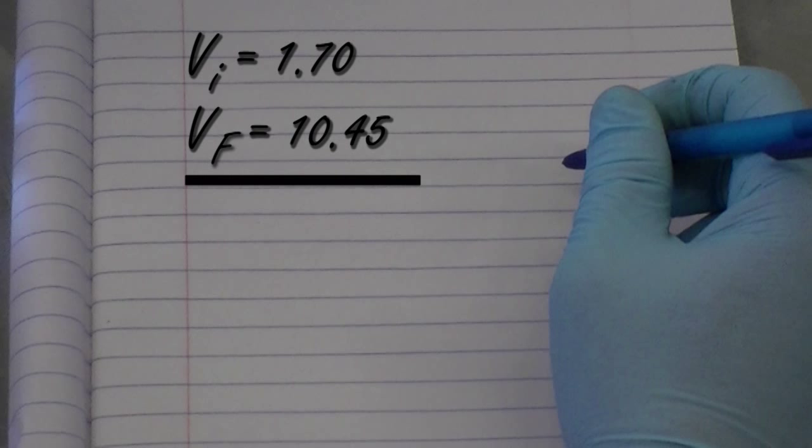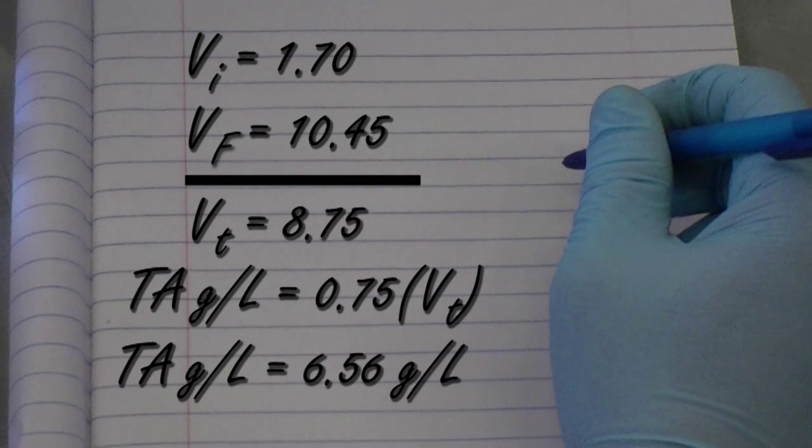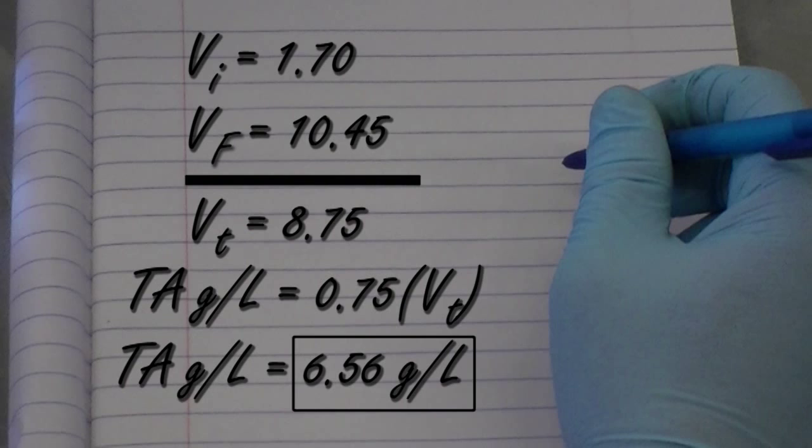Now that we've got our initial volume and our final volume, we can do our calculation for titratable acidity. Our initial volume was 1.70. Our final volume was 10.45, giving us a titrant volume of 8.75. The formula for titratable acidity is 0.75 times our titrant value, giving us a TA, which is titratable acidity in grams per liter of 6.56. Congratulations.